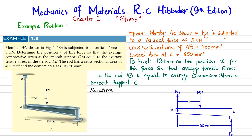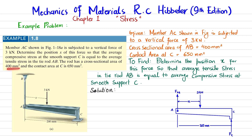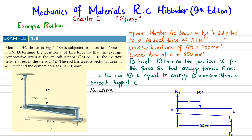The problem statement: member AC shown in figure 1-18A is subjected to a vertical force of 3 kN. Determine the position X of this force so that the average compressive stress at smooth support C is equal to the average tensile stress in the tie rod AB. The rod has a cross-sectional area of 400 square millimeters and the contact area at C is 650 square millimeters.